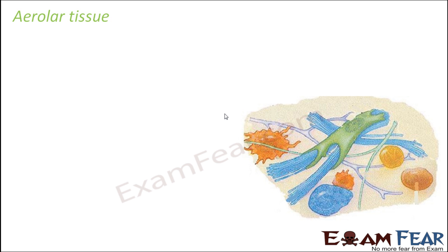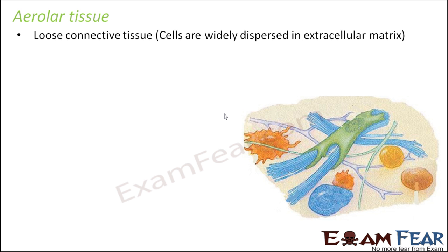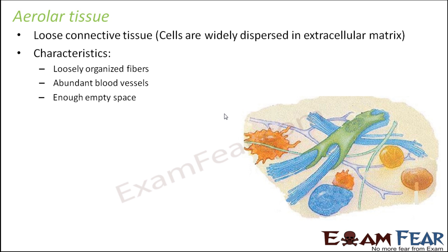Now we will talk about loose connective tissue, where it is not densely packed and there is quite a lot of empty space. In this category we will discuss two tissues: areolar tissue and adipose tissue. Areolar tissue is a loose connective tissue where cells are widely dispersed in extracellular matrix, so there is a lot of space between two cells. Characteristics of areolar tissue include loosely organized fibers, abundant blood vessels, and enough empty space — and because of this empty space they are called loose connective tissue.